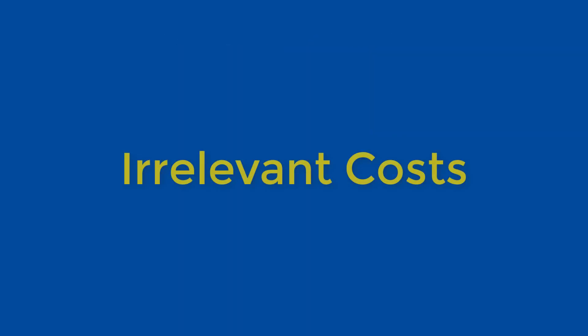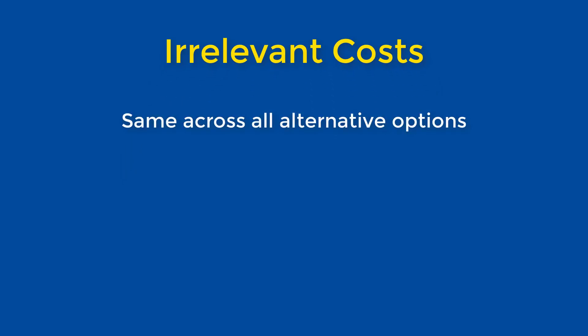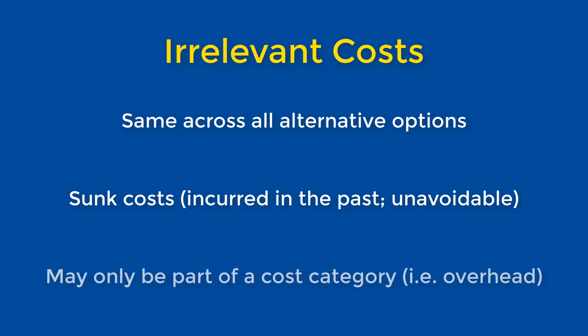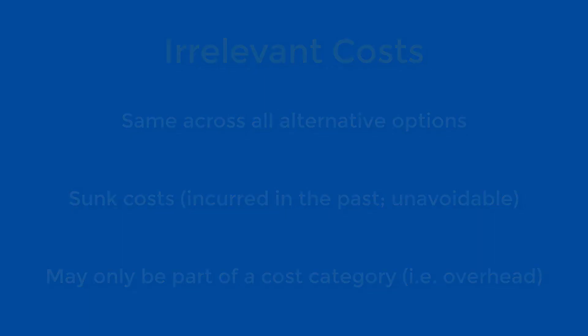On the other hand, irrelevant costs should be excluded from the evaluation of alternative options. Irrelevant costs are the same across all alternatives and are usually fixed costs. For example, some costs that have occurred in the past are unavoidable and are therefore irrelevant to the decision. There may be cases where part of a seemingly irrelevant cost is avoidable, making that part relevant.